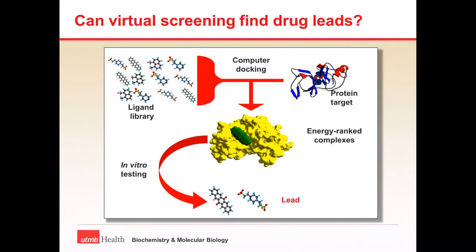On the computer, we load a ligand library — millions and millions of small molecules that we've virtualized and put on the computer. We also load the target protein. The goal is to use a computer docking program to see which of the millions of small molecules in our library will actually fit into the protein target and be predicted to stop it from working. The computer then calculates how strongly those two will interact and returns a list of the best predicted small molecules to accomplish this binding.